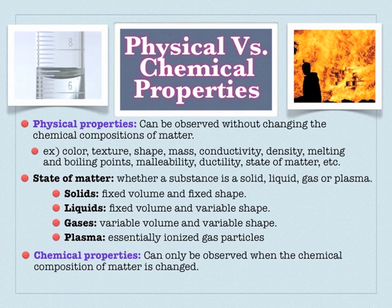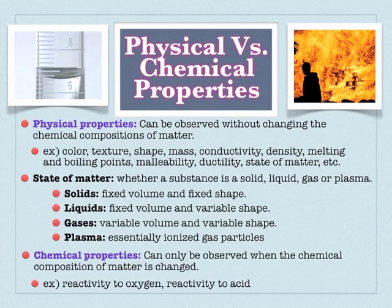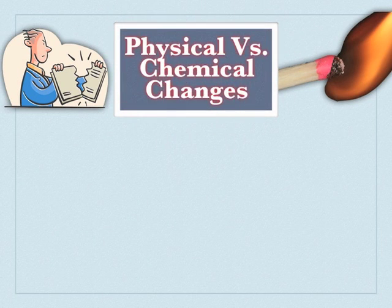Chemical properties are those things that can only be observed when the chemical composition of something is changed. This might be the reactivity to oxygen when you burn something, rusting, or reacting to acid. If you're looking to see if the chemical composition is changing, and that's when you can measure a property, that's probably a chemical property as opposed to a physical property.